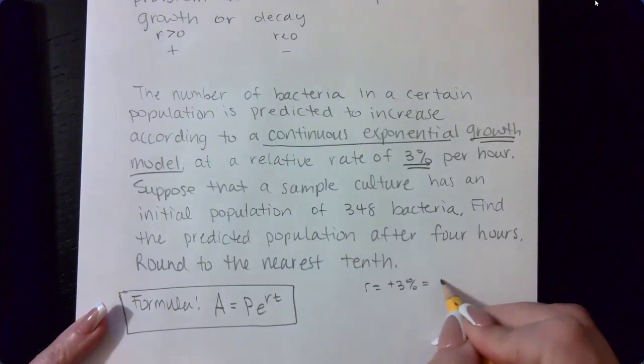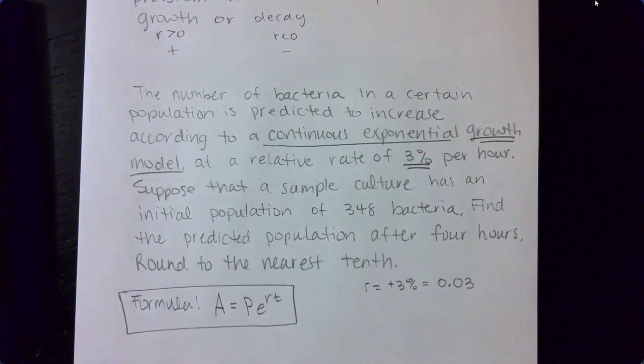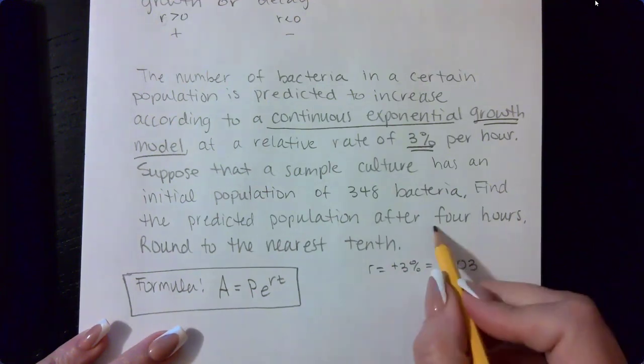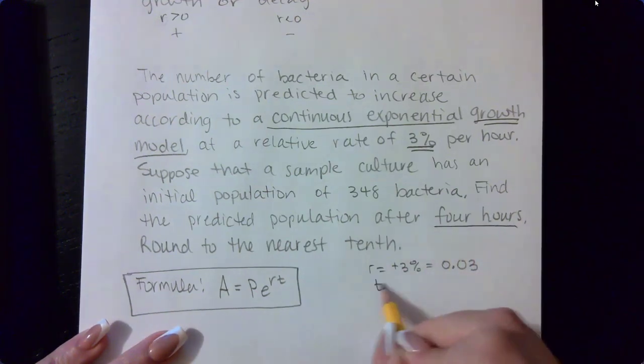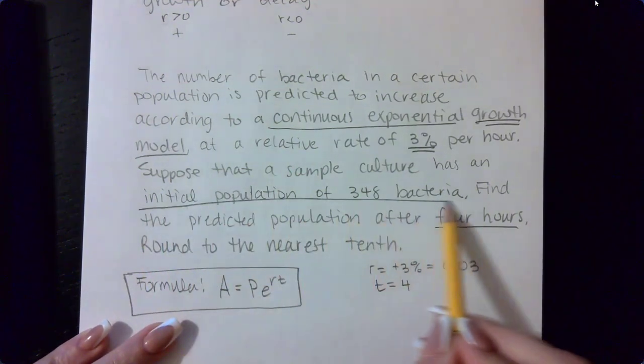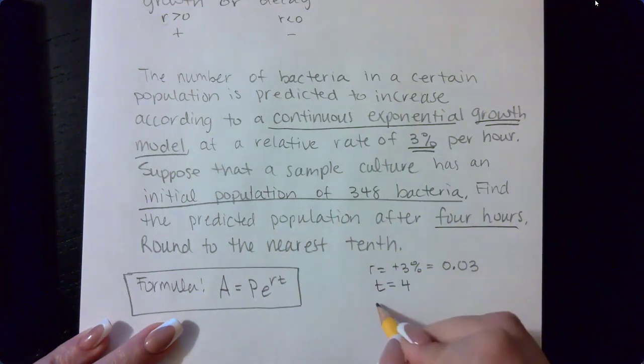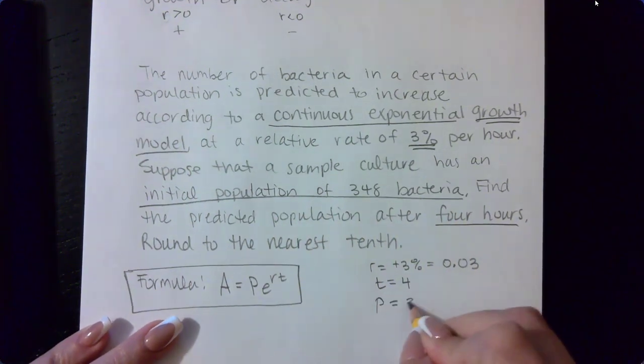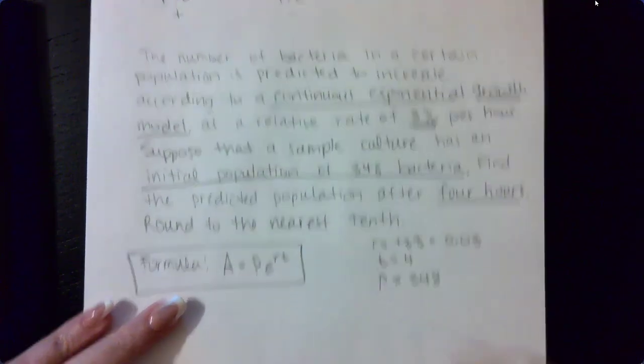If I change that to a decimal, it's going to be positive 0.03. The time we're trying to find is for four hours, so that's going to be my time is four hours. We do have an initial population of 348 bacteria, which is what P represents, that initial population. So, 348.